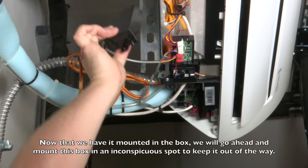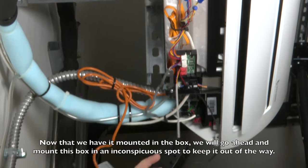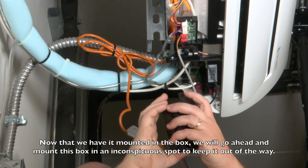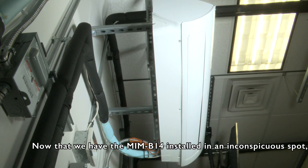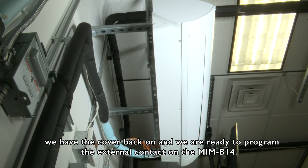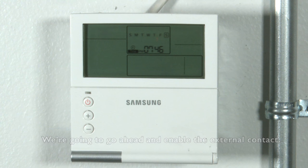Now that we have it mounted in the box, we'll mount this box in an inconspicuous spot. Now that we have the MIM-B14 installed, we have the cover back on, we are ready to program the external contact on the MIM-B14. We're going to enable that external contact.